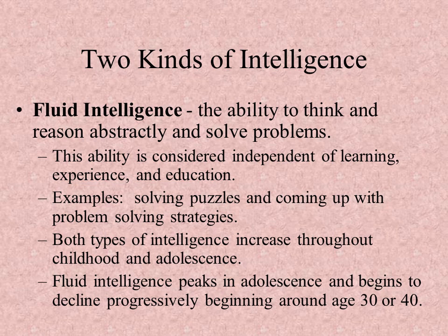Fluid intelligence peaks around adolescence — that's about the strongest peak you're going to get. So if you look around, the people around you are about as good at solving problems as they're ever going to get. Once you reach about 30 or 40, it starts to decline. That's why your grandma or great-grandma doesn't want iPhones or these newfangled technologies, because it involves problem solving.